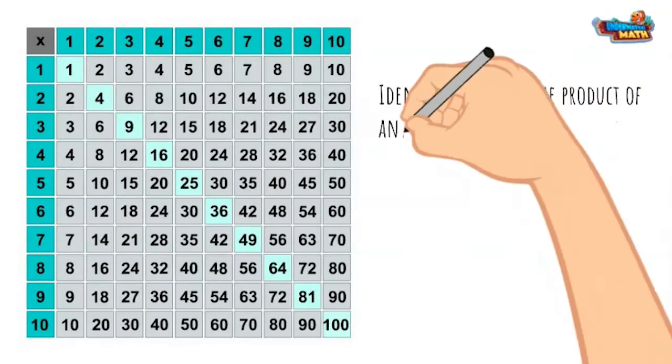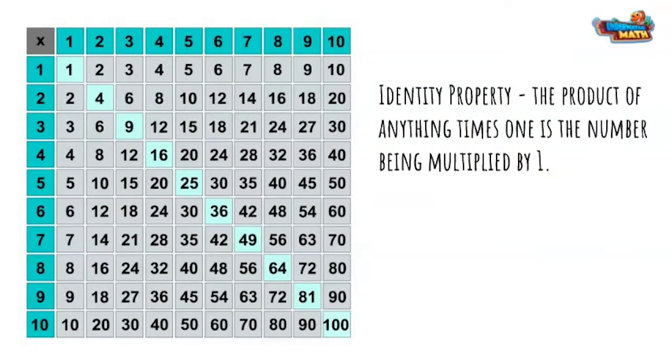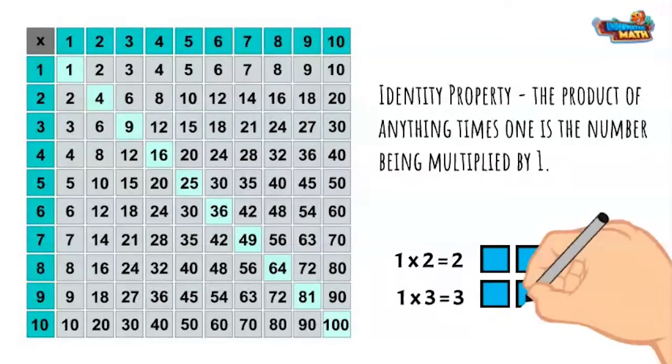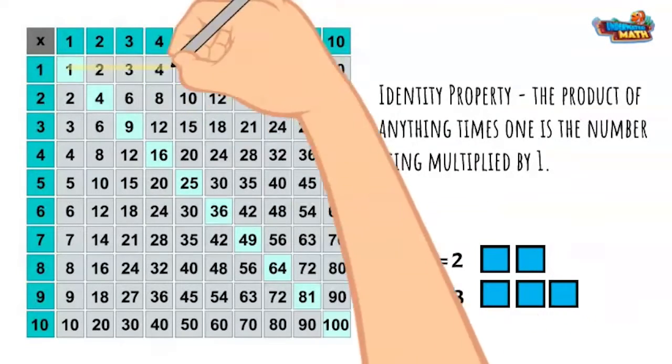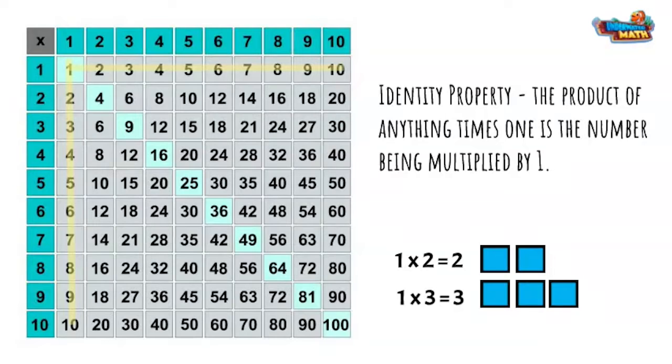The identity property tells us the product of anything times one is the number being multiplied by one. If you have one group of two you have two items. One group of three is three items. The highlighted sections of the chart show all of the ones facts.